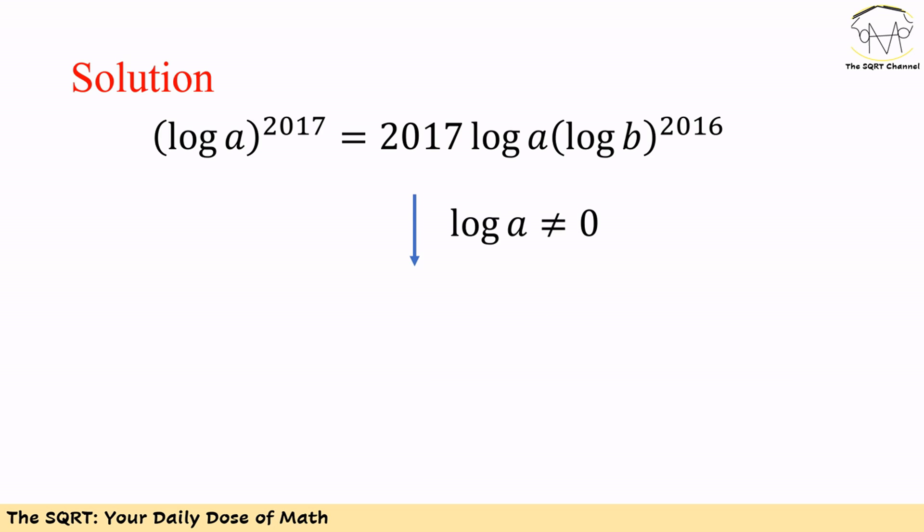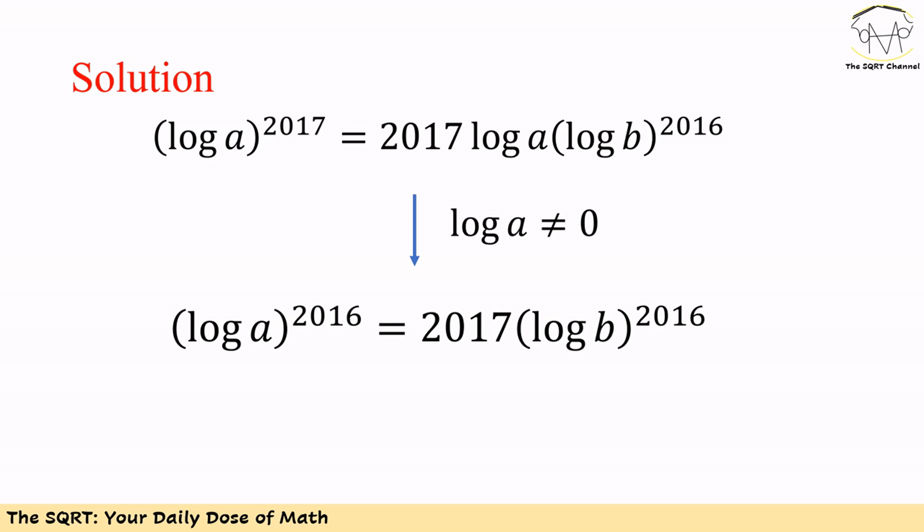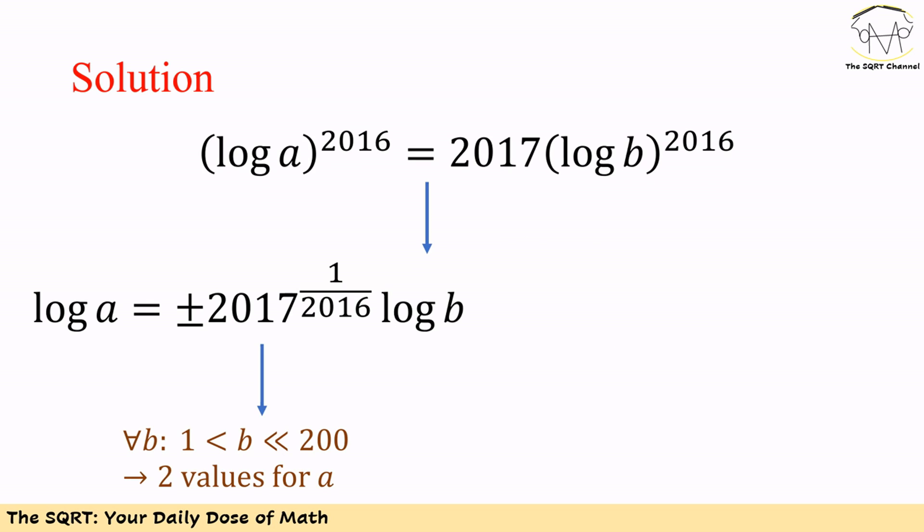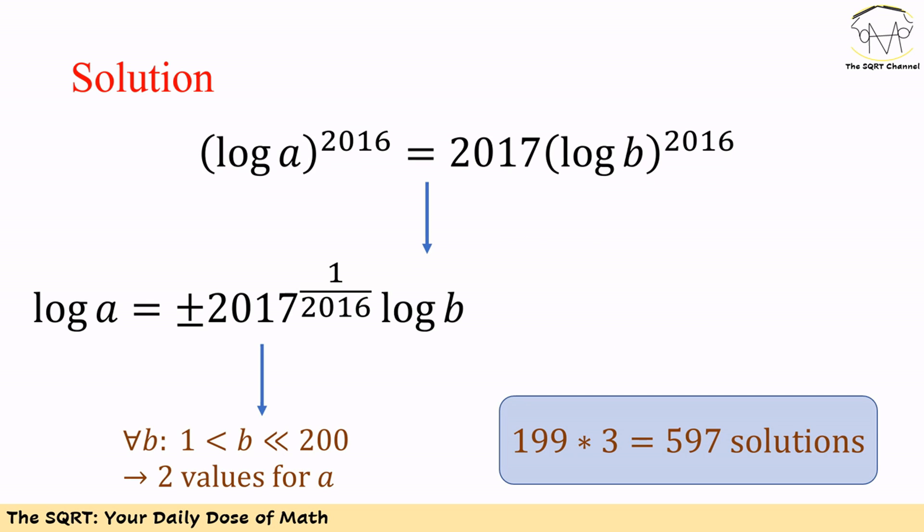Now we assume log A is not zero. We divide both sides by log A and end up with log A to the power of 2016 is equal to 2017 times log B to the power of 2016. From this we can express log A in terms of log B: log A equals log B times 2017 to the power of 1 over 2016.